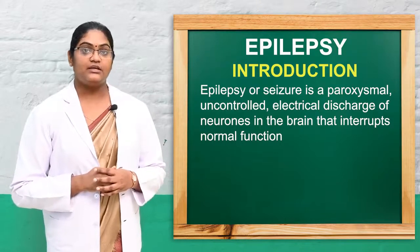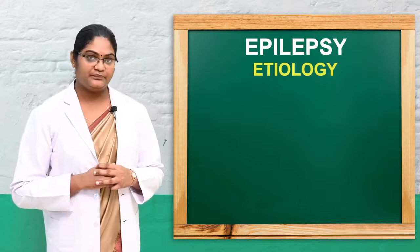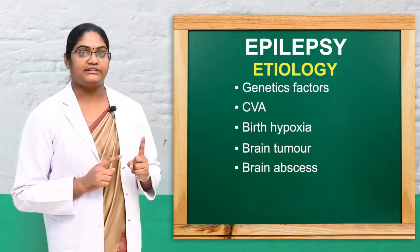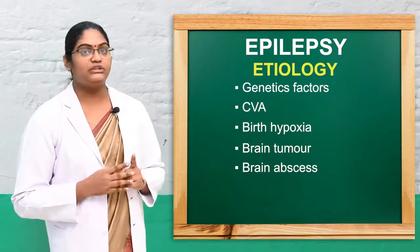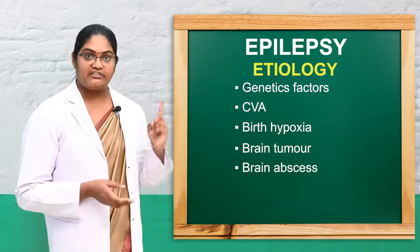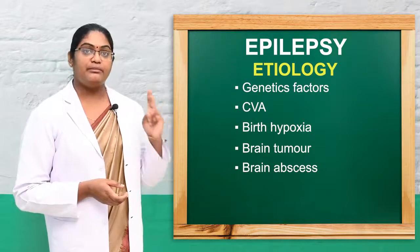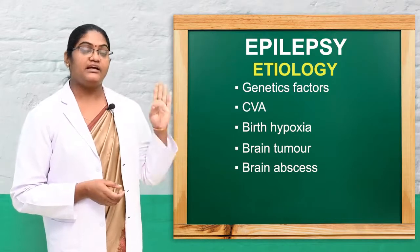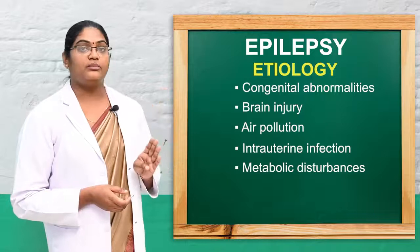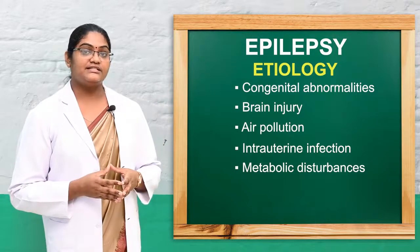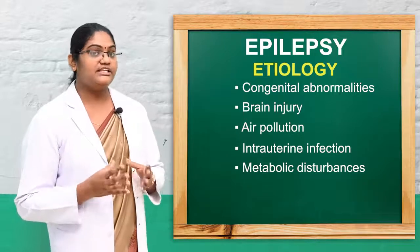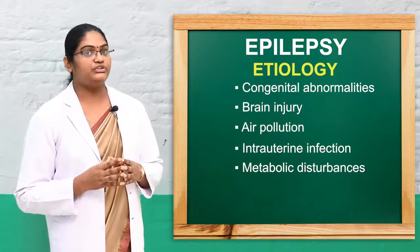Here we can see what are the main etiology and causes of seizure. The causes include: first, genetic factors — since seizure is an inherited disease. Second, brain injury, brain tumor, brain abscess, cerebrovascular accident, congenital anomalies, metabolic disturbances, and intrauterine infections. These are the etiology and causes of seizure.